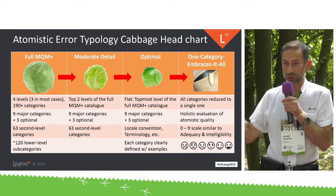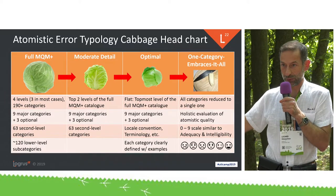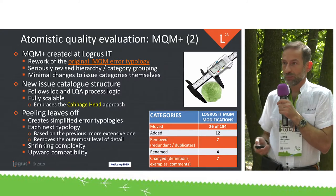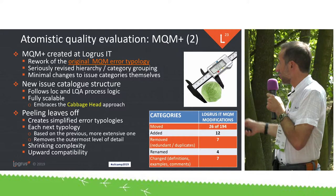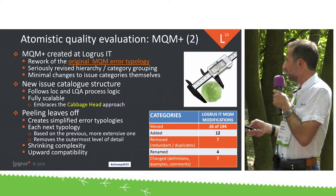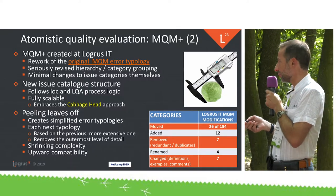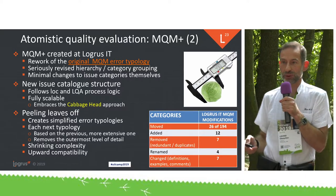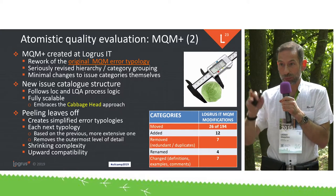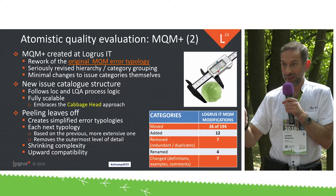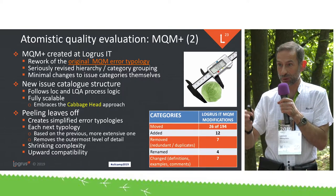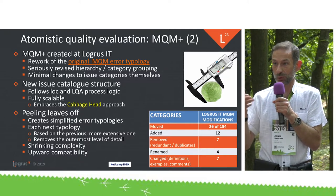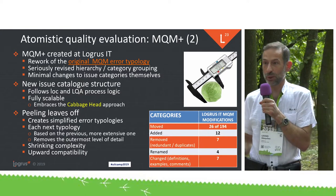We only had to move 26 categories out of 200. We added 12, removed 7 — some were simply duplicates or redundant. We renamed 4 and changed some definitions in 7. It was not just cosmetic work, but we completely restructured it, and now it's a nice clean cabbage head where you can peel the leaves off and use any complexity of the error typology that's relevant for your projects, your product, or your area. Complete upward compatibility.